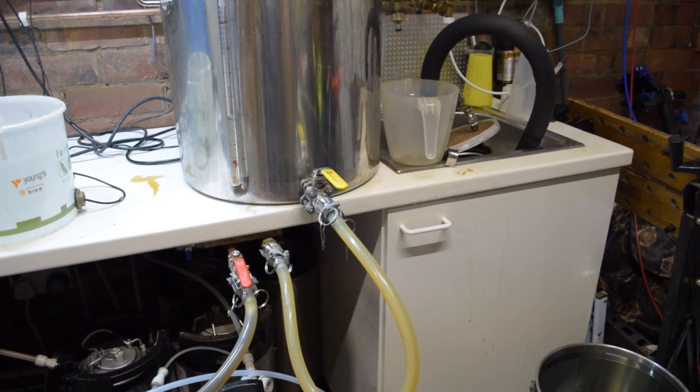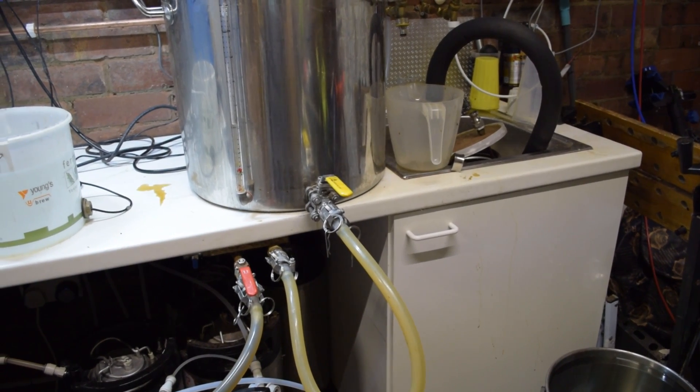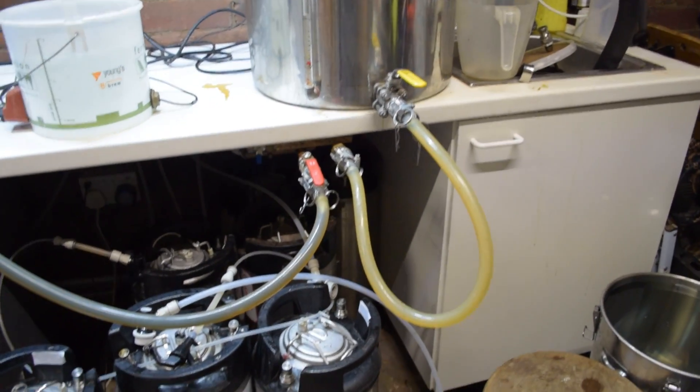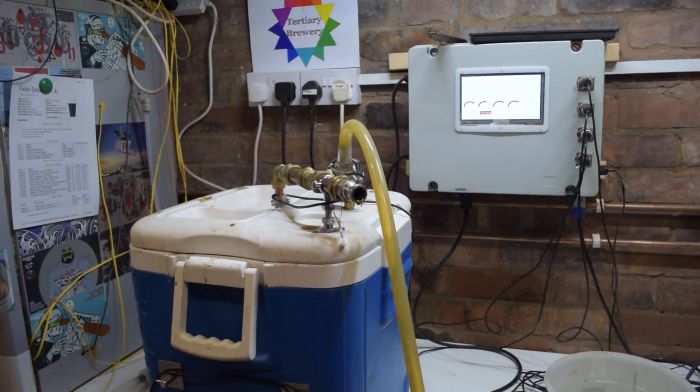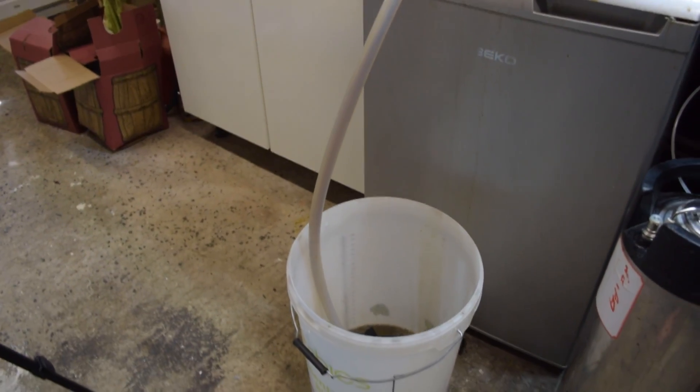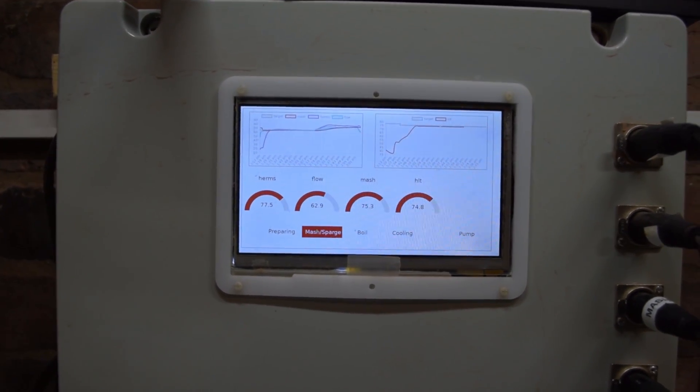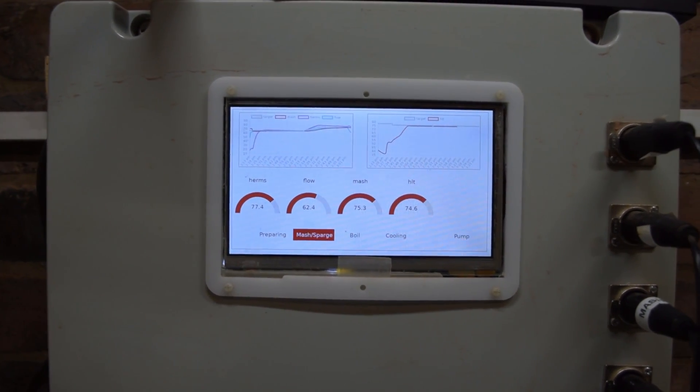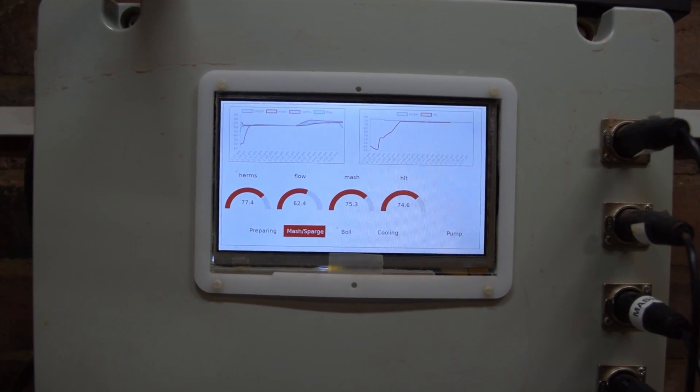And now we're ready to start sparging. We have water coming off the, well it's still the HLT at this point, going through the pump and up and in through the sparge manifold at the top here. And out the bottom is flowing the wort into a simple plastic bucket for collection. I use a single mode for mash and sparge as all it's doing is holding the various vessels at various temperatures. I may move to a separate sparge mode once I start controlling the pump from the controller panel.